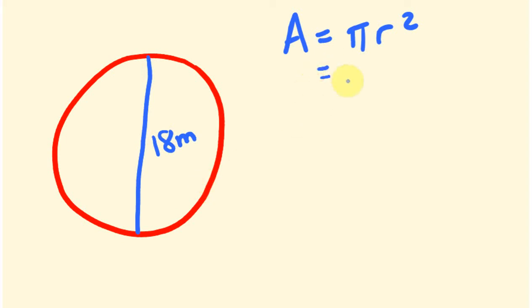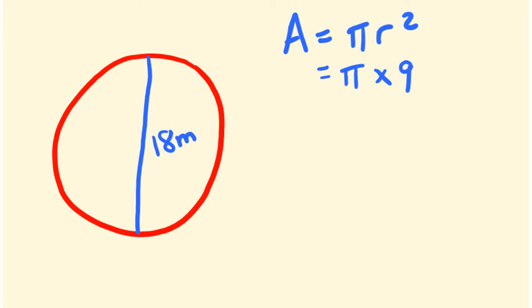We're going to work out the area. The area equals pi r squared. You might want to pause this and work it out yourself. The area equals pi times the radius. Now the radius is half the diameter, so that's 9 meters times 9 meters. These are both in meters, so the answer is going to be in meters squared.